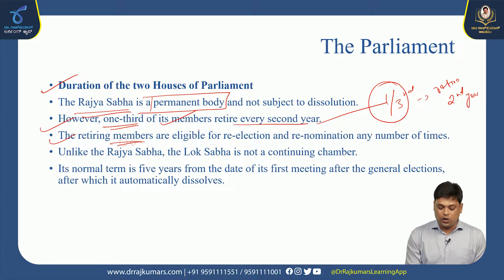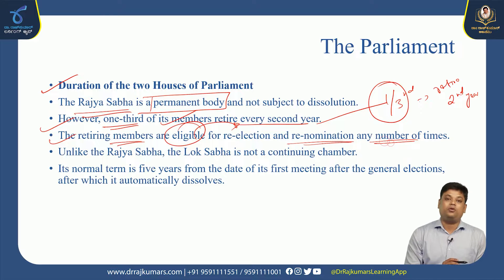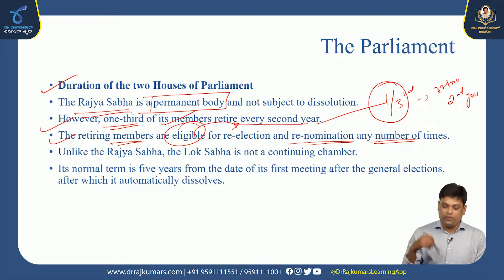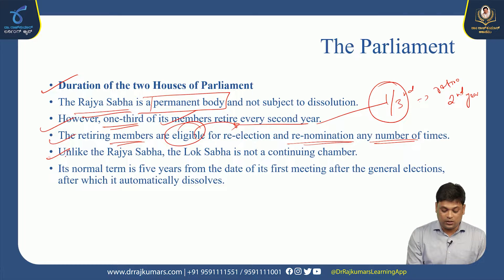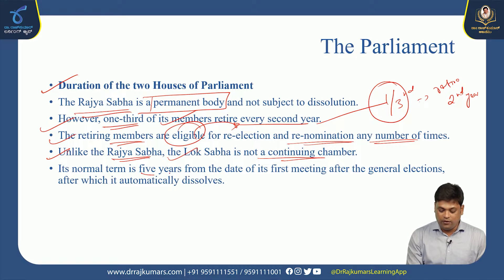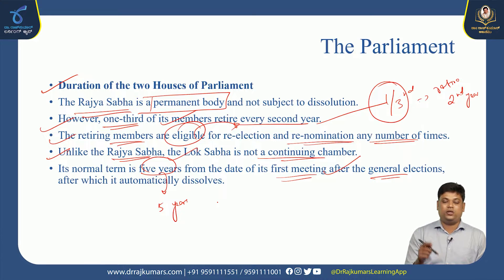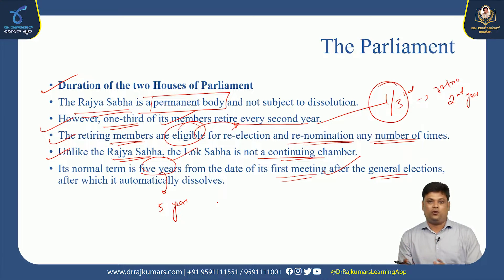The retiring members of Rajya Sabha are eligible for re-election and re-nomination any number of times. Unlike Rajya Sabha, the Lok Sabha is not a continuing chamber. The normal term of the Lok Sabha is five years from its first meeting after a general election, after which it automatically dissolves. Every five years there will be an election and a possible change of government.